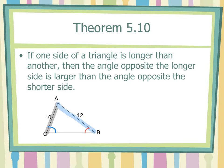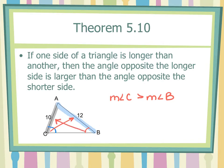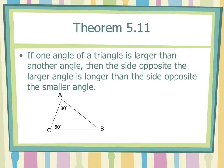Whatever is opposite the longer side is the bigger angle; whatever is opposite the shorter side is the smaller angle. So the measure of angle C is bigger than the measure of angle B, because the side opposite C is bigger than the side opposite B. Now talking about the reverse: if one angle of a triangle is larger than another angle, the side opposite the larger angle is longer than the side opposite the smaller angle.